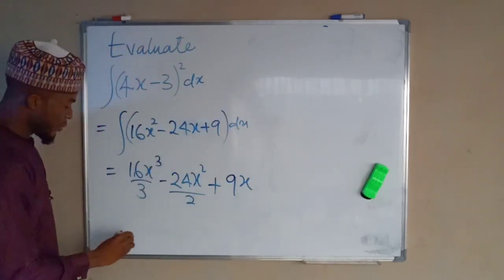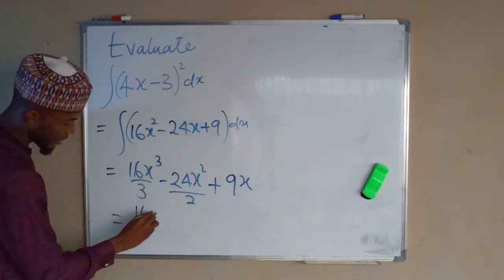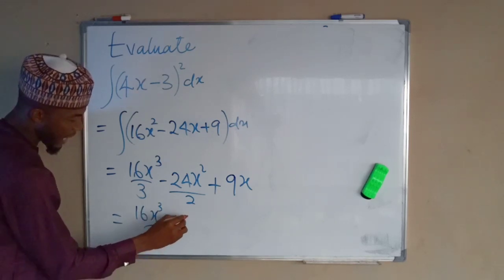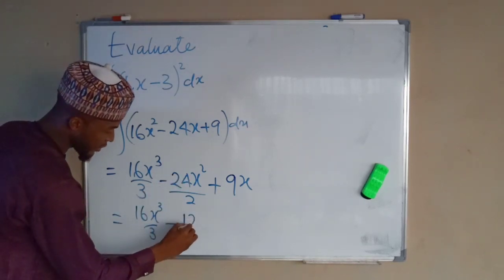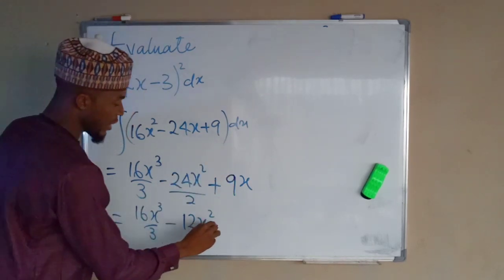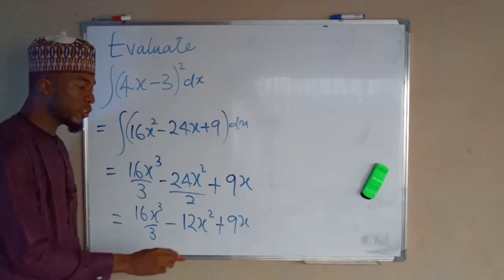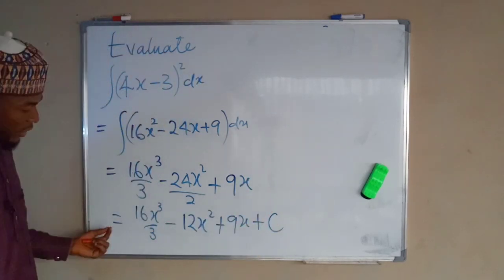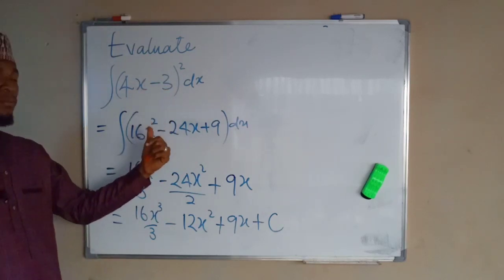Further simplifying: this gives 16x to the power of 3 divided by 3, minus 24 divided by 2 which is 12 so we have 12x squared, plus 9x, and finally our constant of integration C. This is what we obtain after integrating the function using the expansion method.